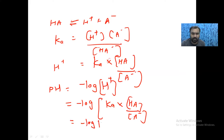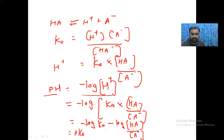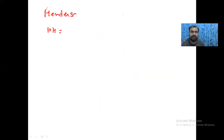When we add logarithms to both sides, we can write it as log Ka, and reversing numerator and denominator gives us the Henderson-Hasselbalch equation: pH equals pKa plus log of base upon acid. This is the Henderson-Hasselbalch equation.